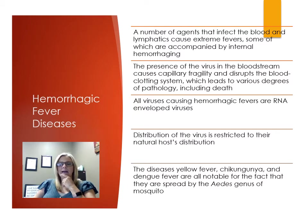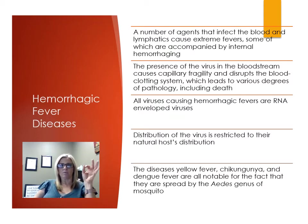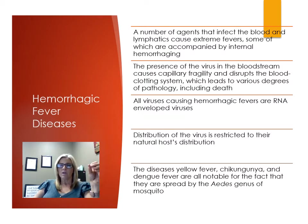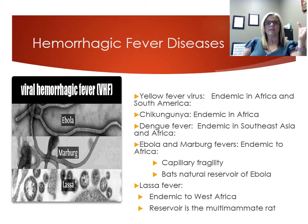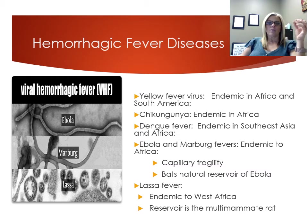Ebola had a major outbreak in 2014 in Africa — the biggest Ebola outbreak on record and one of the worst hemorrhagic fevers. There's also chikungunya, yellow fever, and dengue fever, which are spread by mosquitoes. These hemorrhagic fever diseases are caused by filoviruses, which act by disrupting clotting factors, preventing blood from clotting. Transmission is through contact with bodily fluids, and there is no known treatment. The virulence factor is disruption of the blood clotting system, causing bleeding and shock.